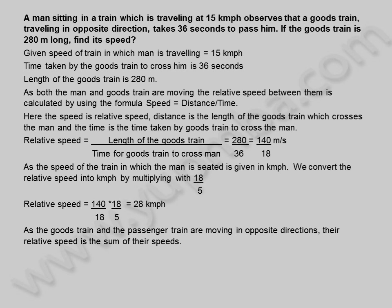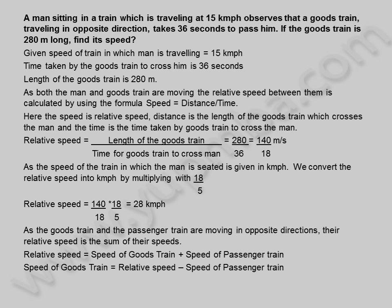As the goods train and the passenger train are moving in opposite directions, their relative speed is the sum of their speeds. Speed of goods train is equal to relative speed minus speed of passenger train, which is 28 minus 15 kilometers per hour, equal to 13 kilometers per hour.